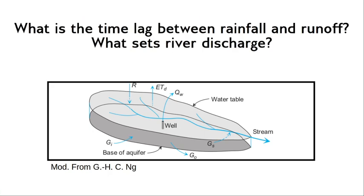The hydrograph is basically a plot — a measure of water discharge through time. What we want to know is what sets the relationship between the hydrograph and what we call the hyetograph, or the time series of precipitation on the surface. From that, we're also going to ask the broader question of what sets river discharge.